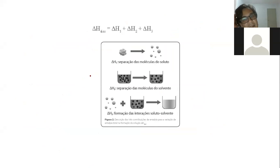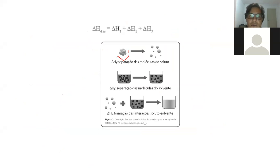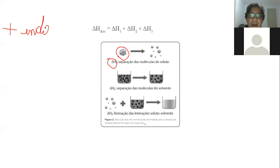Lembrando que quando eu misturo soluto com solvente, as moléculas do soluto têm que se separar e isso gera uma entalpia, gera um calor. Essa entalpia pode ser positiva ou negativa. Quando ela é positiva, significa que ela é endotérmica, ou seja, ela absorveu calor do meio. Quando ela é negativa, ela é exotérmica, ou seja, ela liberou calor.